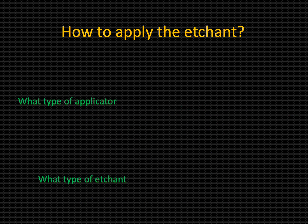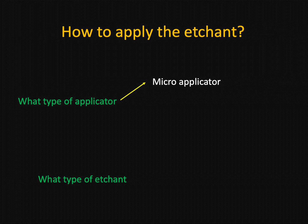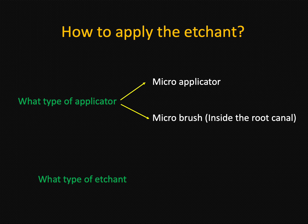Let's discuss how to apply the etchant. Obviously it should be applied with an applicator, and we have two types. One is called a micro-applicator and the other is called a micro-brush. A micro-applicator should be used when you use the etchant towards any cavities, primarily for restorative purposes. Whereas a micro-brush should be used when you want to put the etchant inside the root canal — for example, after post space preparation, if you want to etch the post space, you need to use the micro-brush.